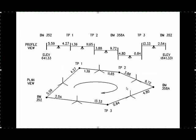Here is a profile view and a plan view of a hypothetical benchmark circuit. On the profile view on the top, you can see that we start at benchmark 352 and then use two turning points to move us forward to measurements on to benchmark 358A, which in this case is our unknown point. Then we, through turning point 3, run our circuit back to our starting point, benchmark 352. The plan view indicates that the route we take going out to benchmark 358A and coming back don't have to necessarily be the same.